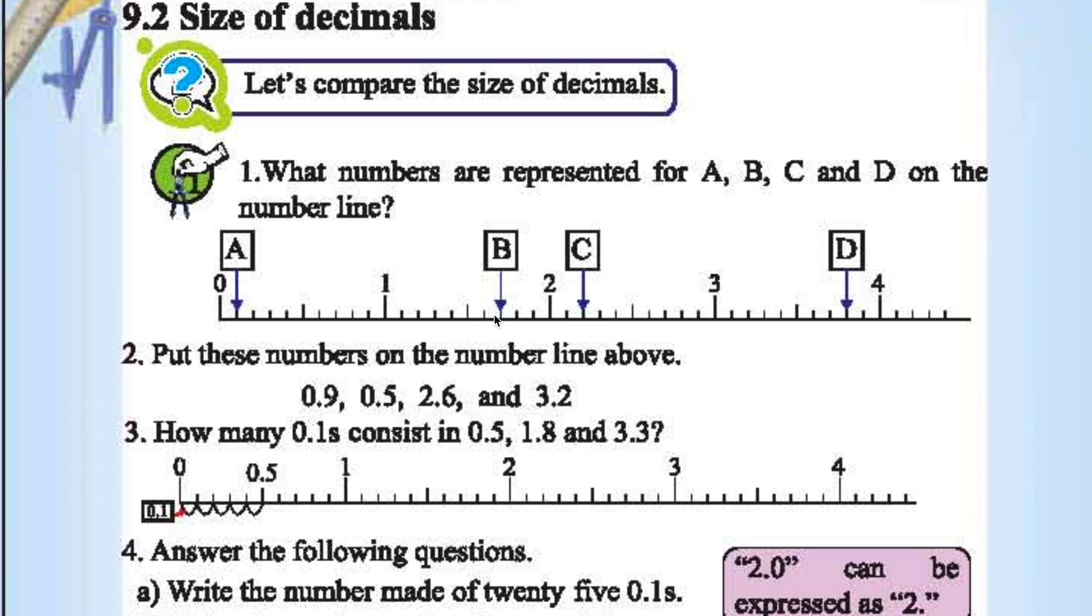B represents 5, 6, 7. 7th after 1. So 1.7. This one 2.2. And this one 1, 2, 3, 4, 5, 6, 7, 8. 3.8. D represents 3.8.